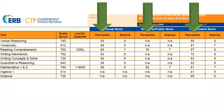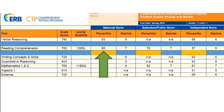Let's look at the percentile rank for each norm group. The percentile rank indicates how many students in a norm group had scores that were the same or lower than this student's score. A percentile does not indicate the percentage of questions that your student answered correctly. This student's percentile rank for reading comprehension on the national norm is 80, meaning this student scored better than 80% of other students nationally in reading comprehension.